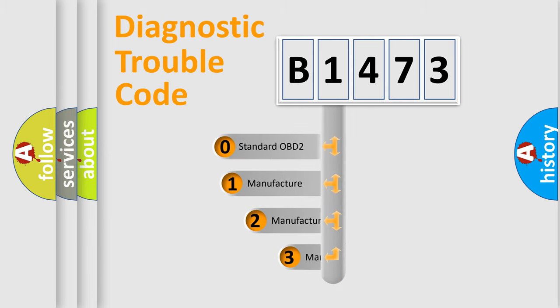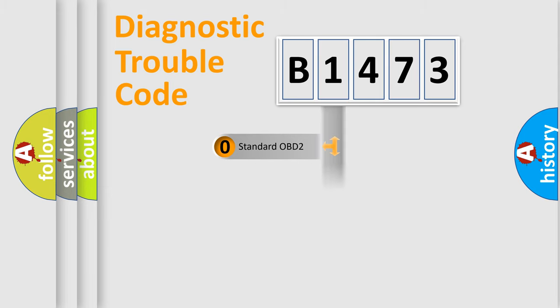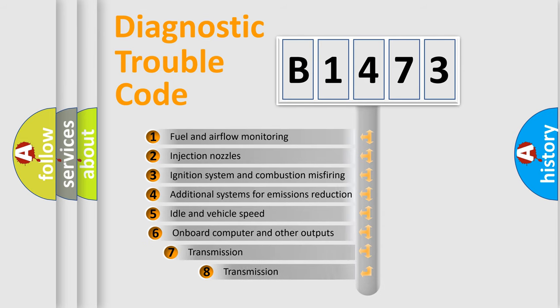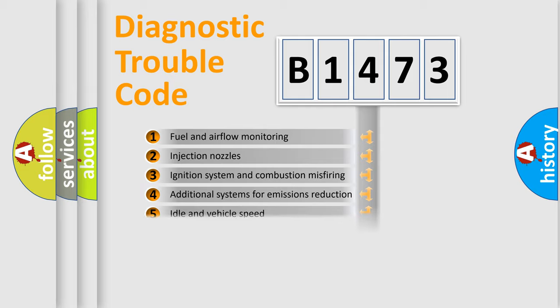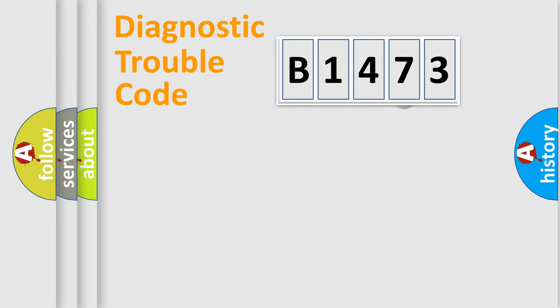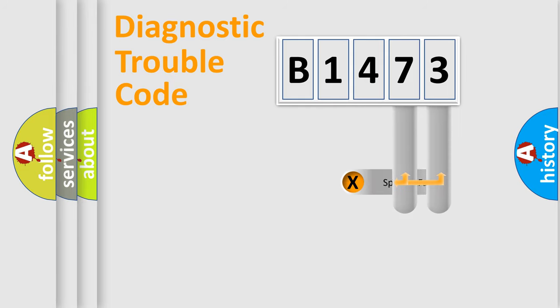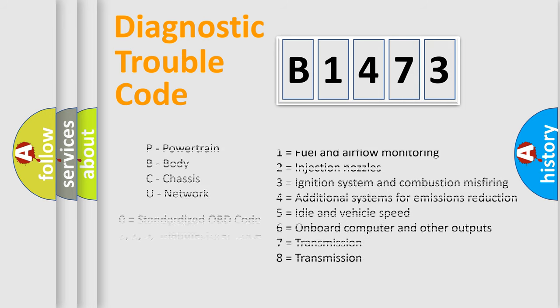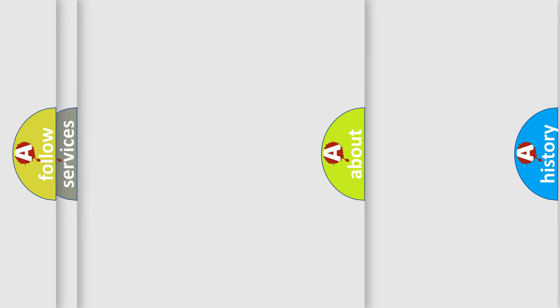This distribution is defined in the first character of the code. If the second character is expressed as zero, it is a standardized error. In the case of numbers 1, 2, or 3, it is a more manufacturer-specific expression of a car-specific error. The third character specifies a subset of errors. The distribution shown is valid only for the standardized DTC code, and only the last two characters define the specific fault of the group. This division is valid only if the second character is expressed by the number zero.